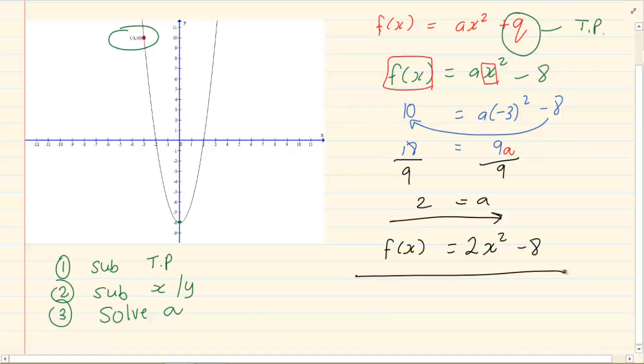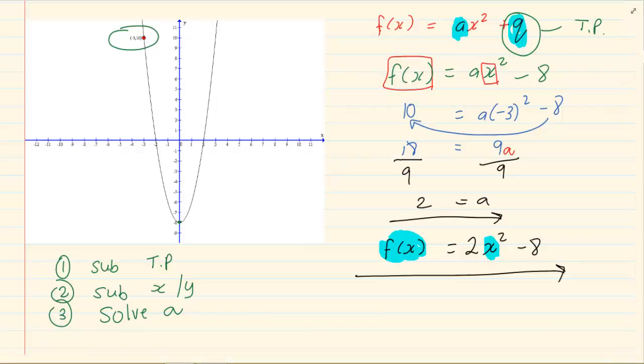In an equation, your final equation, the only unknowns you must have is your x and your f of x. Other than that everything else must have a value. So my a's and my q's need to have values. Let us try another example.